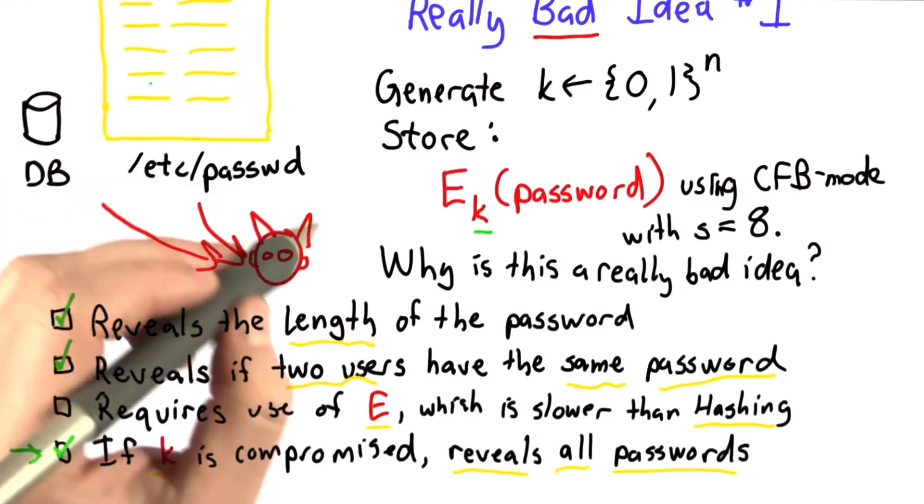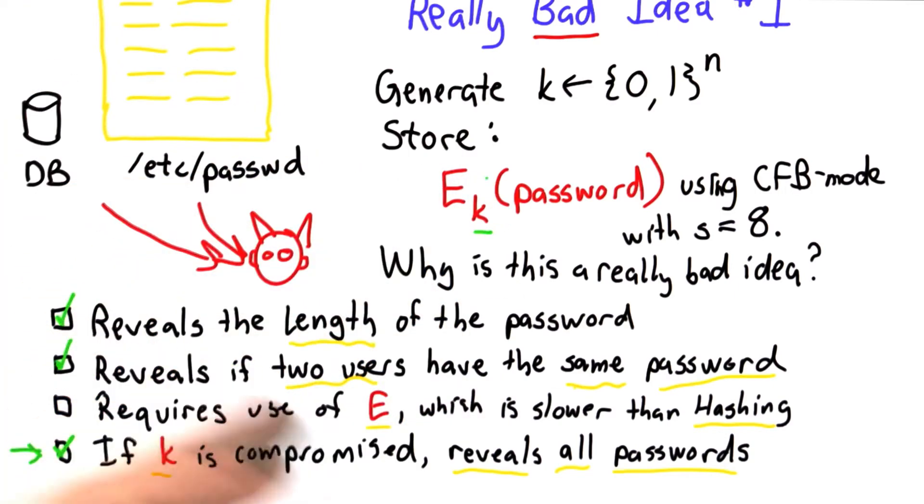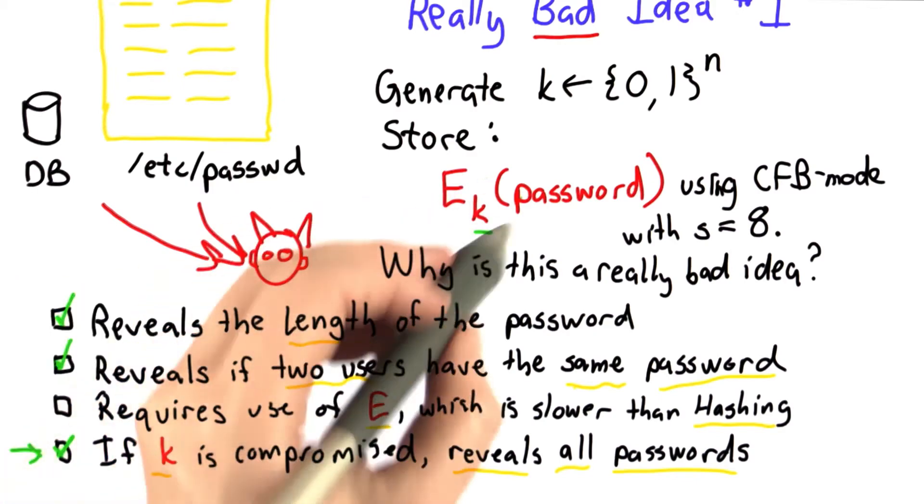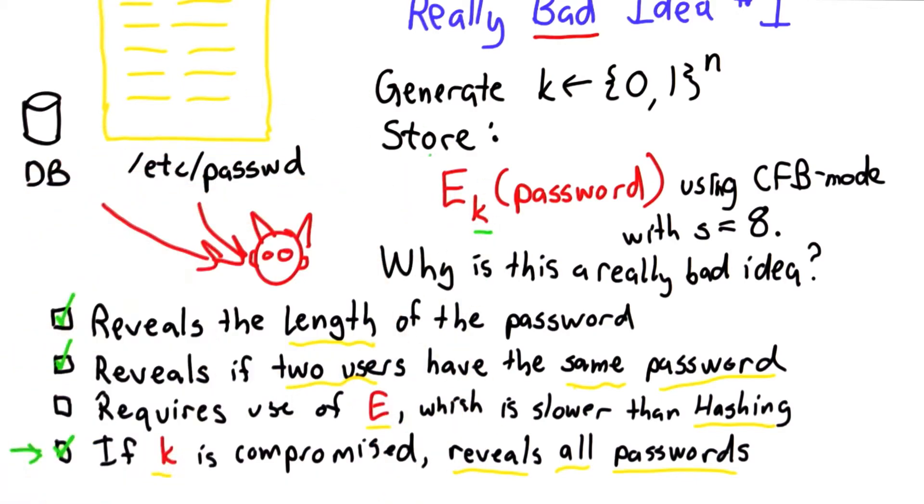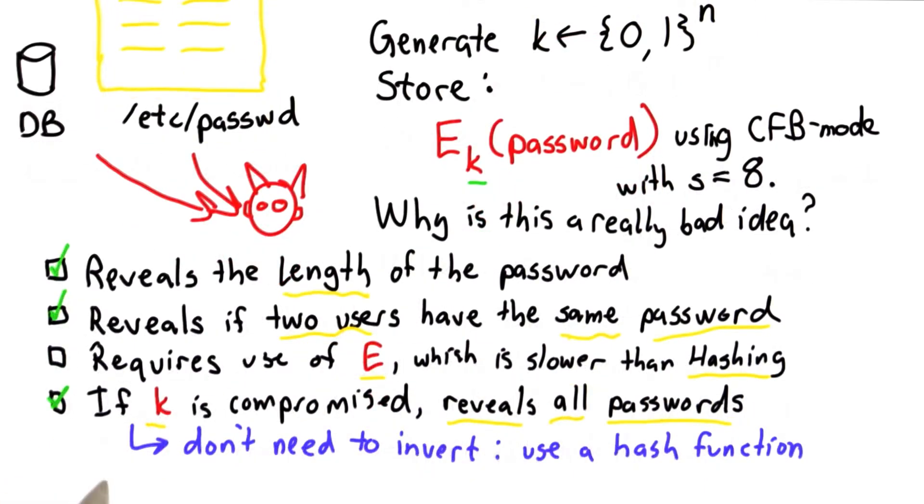So chances are, if the password file is compromised, the key is also compromised because it's available in memory, it's stored in this program, or it's readily accessible because we need it every time we check a password.